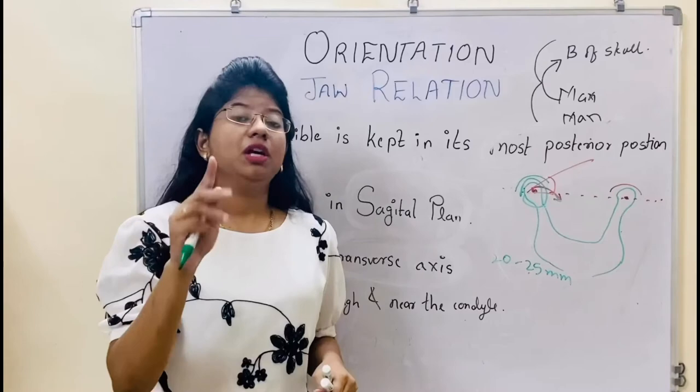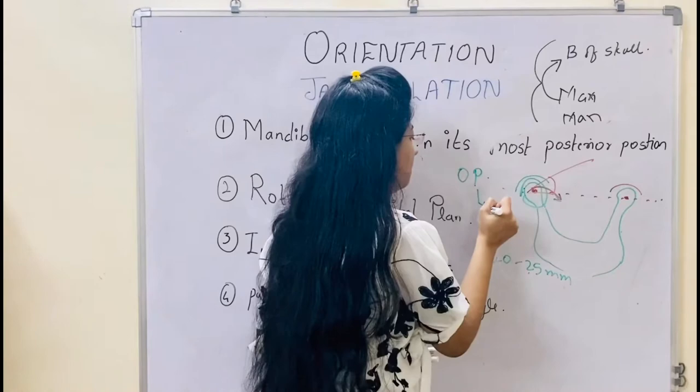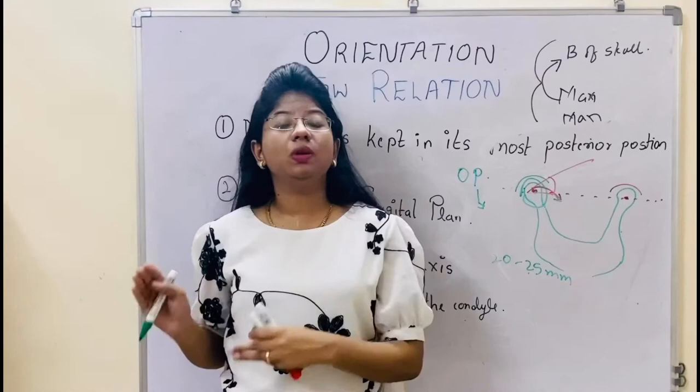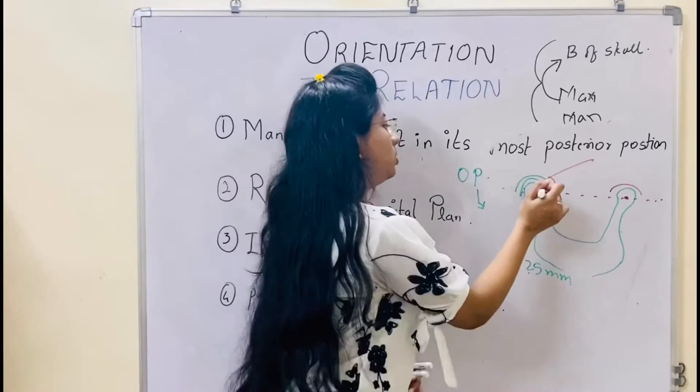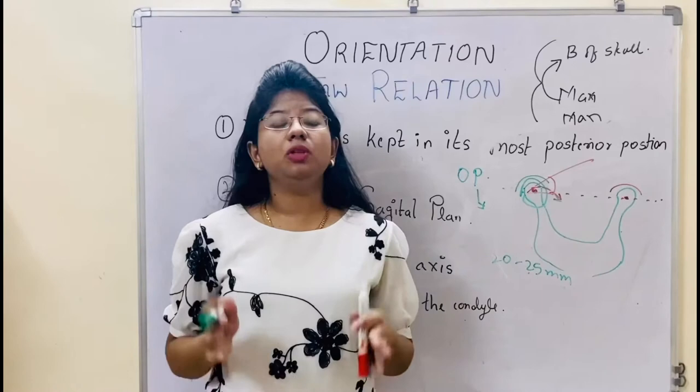If you do not record the occlusal plane properly, there will be problems like interferences and deflective contacts, which will eventually cause temporomandibular joint disorders. So these are all interconnected — orientation relation connects to the occlusal plane, which eventually connects to the temporomandibular joint, causing problems. To avoid that, you need to record orientation jaw relation correctly.